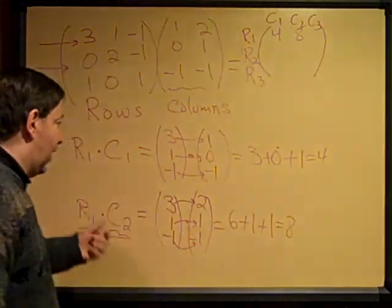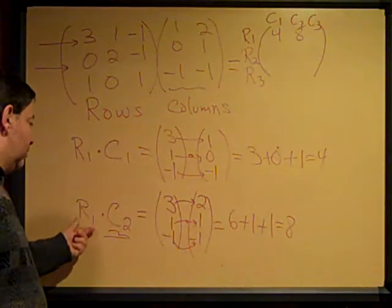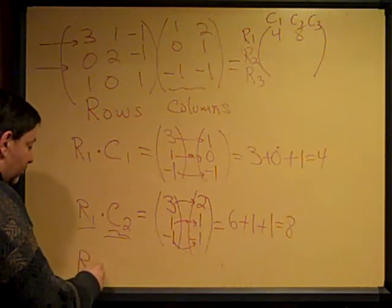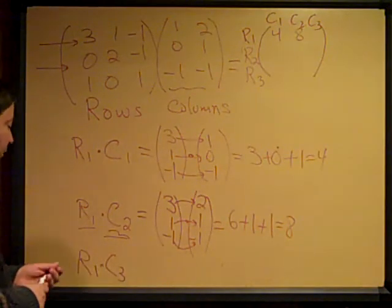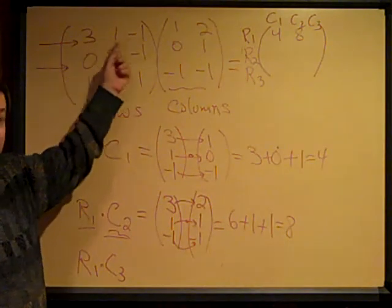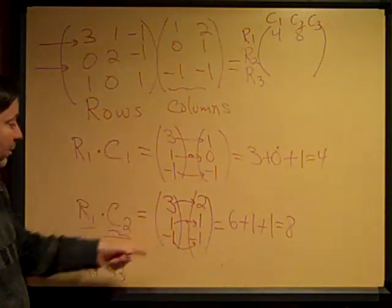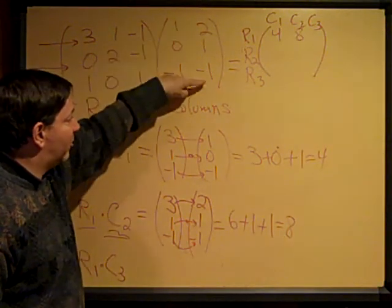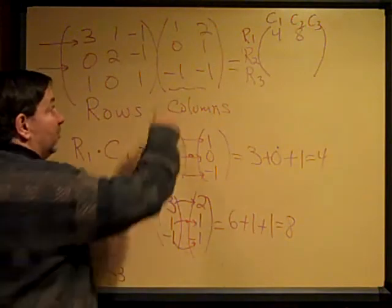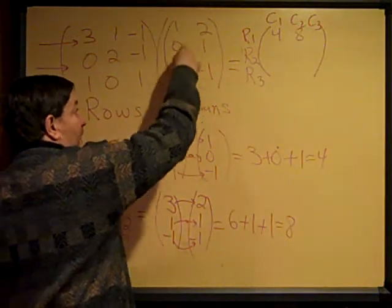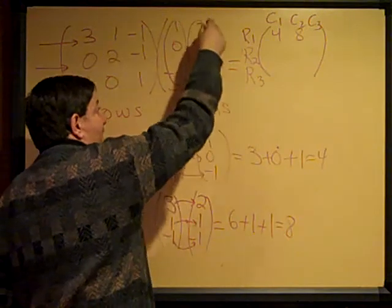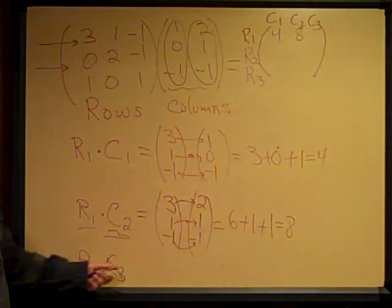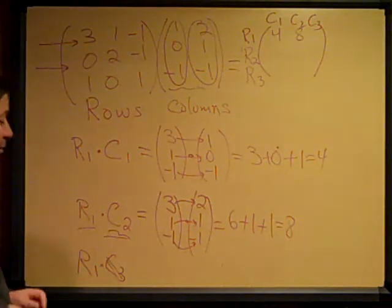I dotted row 1 with column 1, then row 1 with column 2. Now it's logical to try row 1 with column 3. I know what row 1 is: 3, 1, negative 1. But what's column 3? Well, we have column 1 and column 2, but there is no third column of numbers. So you can't dot row 1 with column 3, and we are done with row 1. That means we go on to row 2.